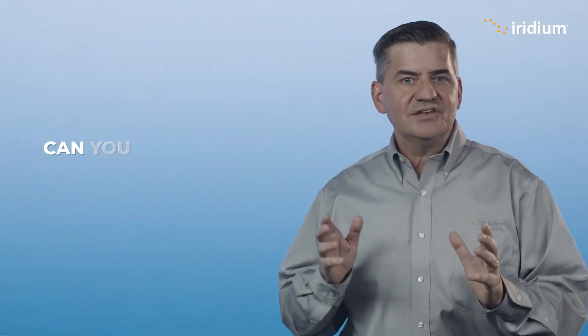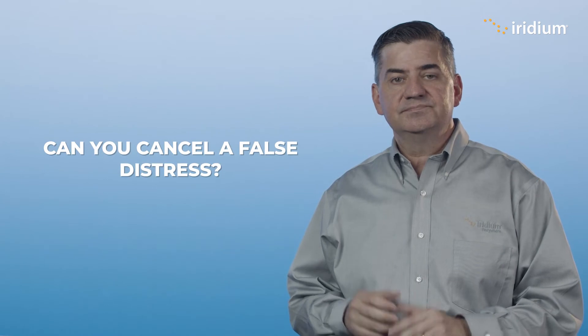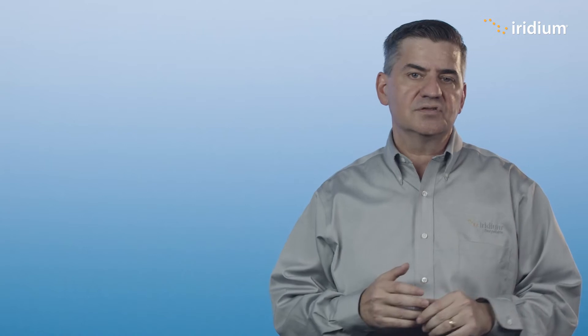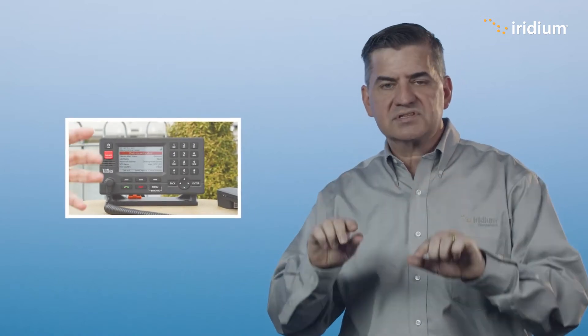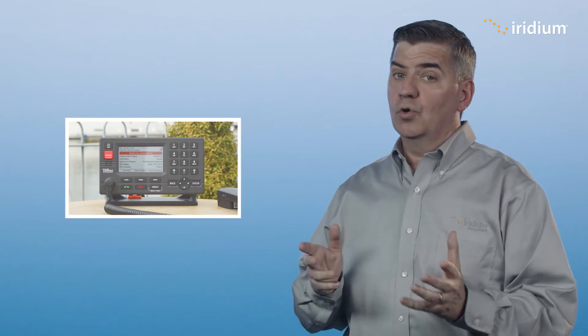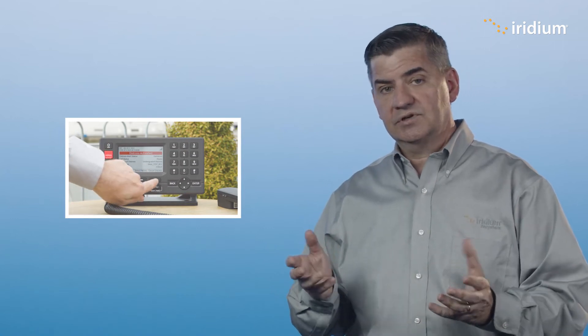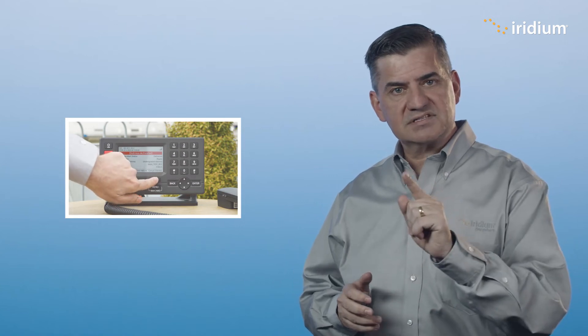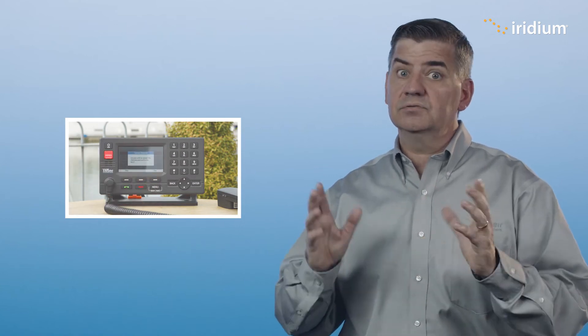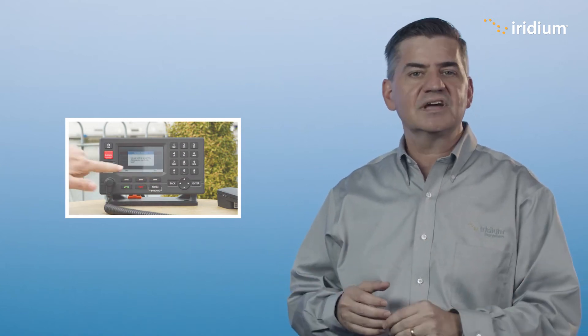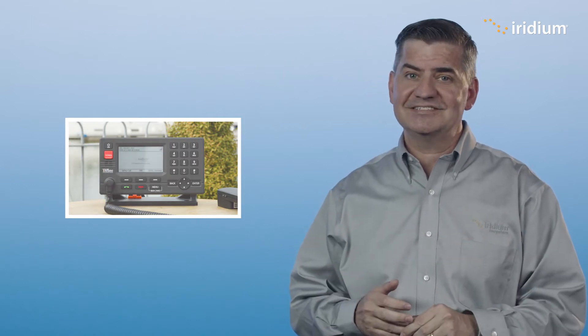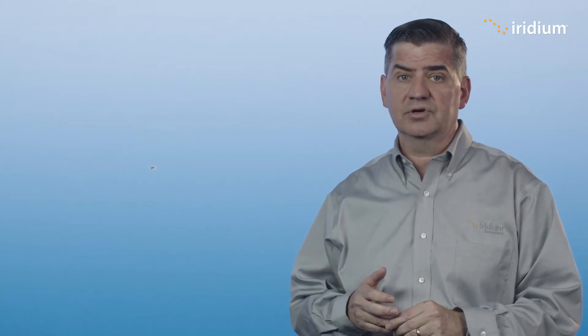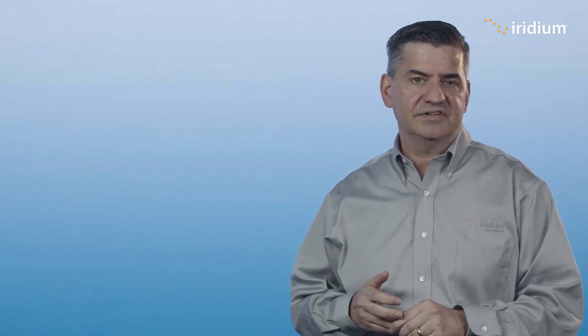Next question: can you cancel a false distress? Absolutely. When you press the distress button on the LT3100 S, the screen will go red, but at the bottom of the screen there is a cancel option. So all you need to do to cancel your distress is press cancel and then it'll ask you do you really want to cancel? Of course, and you can confirm and the distress is cancelled. You may still get a call from the RCC checking to make sure you're okay, but that will effectively cancel the distress.